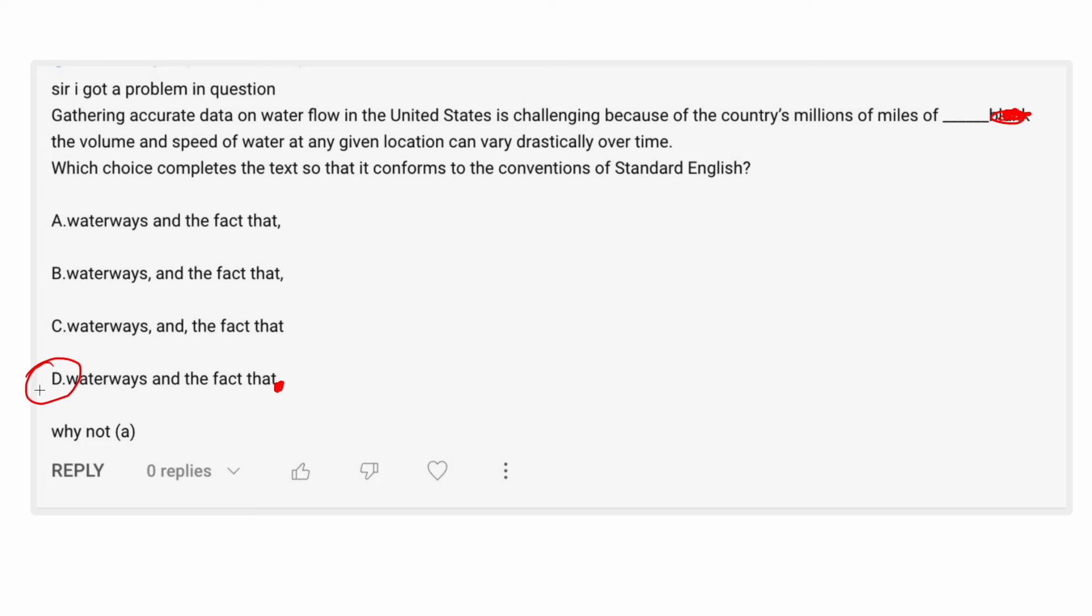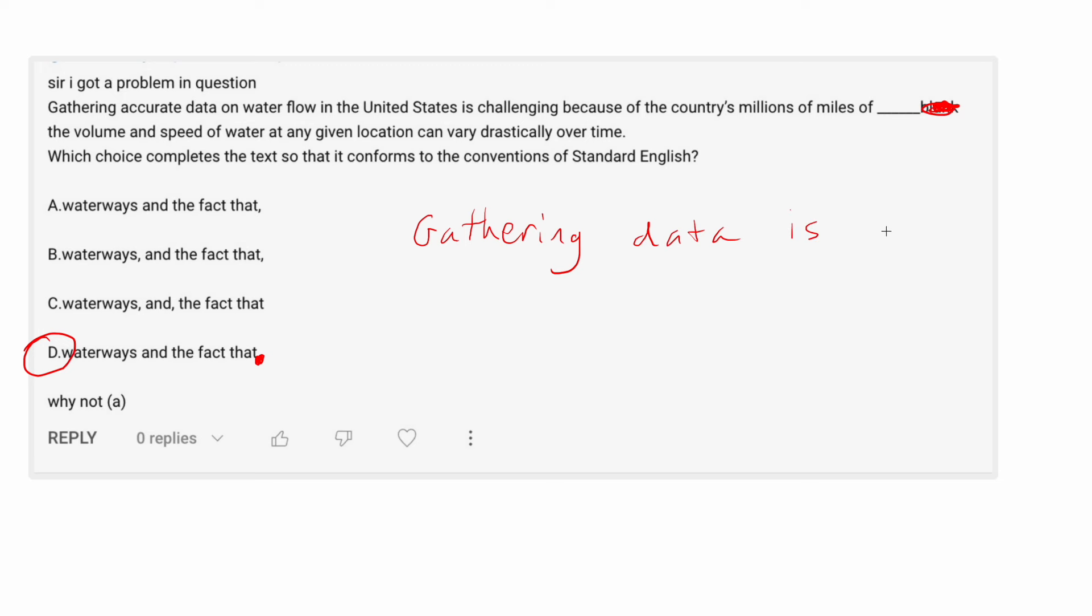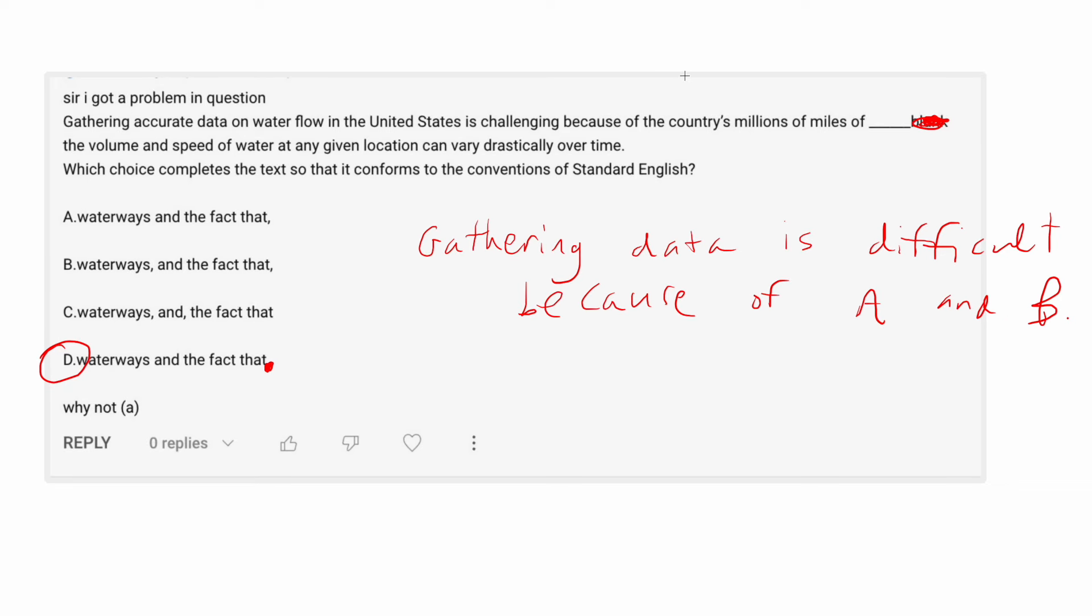I'm saying, I'm going to say that D is going to have to be the correct answer. And essentially, what we get is something like this. Gathering data. I'm going to simplify the sentence here. Gathering data is difficult because of A and B, meaning, you know, reason A and reason B, because of the country's millions of miles of waterways and the fact that the volume and speed of water in any given location can vary drastically over time.